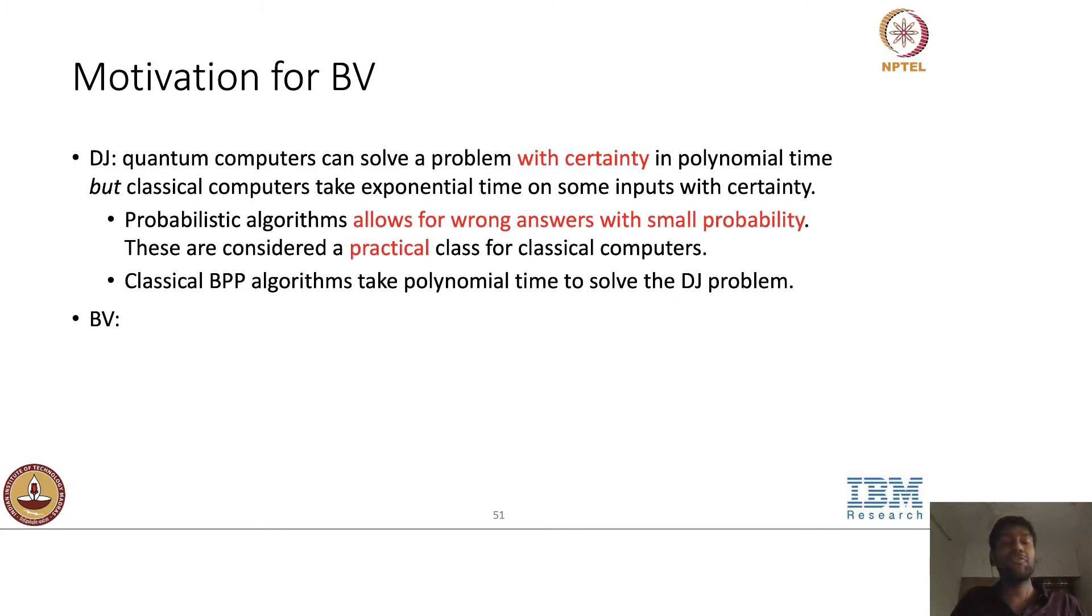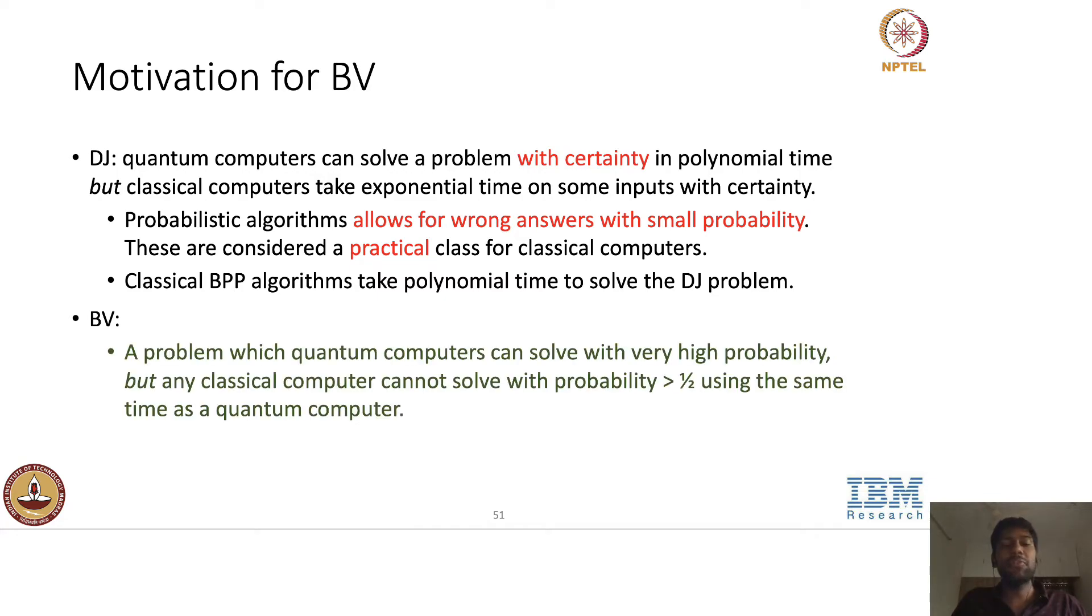So the motivation for Bernstein and Vazirani is as follows. They came up with a problem which quantum computers can solve with very high probability in some time, but any classical computer cannot solve with probability greater than half using the same time as a quantum. Extending this, for those who know, this can be thought of as an oracle separation between the complexity classes BQP and BPP.